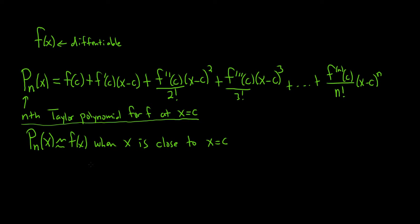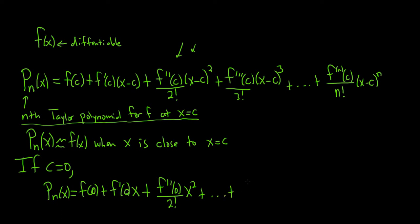If c is equal to 0, we get p sub n of x equals, let's rewrite it all, we would just get f of 0, f prime of 0. And then we would get x minus 0, so just x, plus f double prime of 0 over 2 factorial times x squared. All the c's up here are 0's, etc., all the way to the nth derivative at 0 over n factorial, x to the n.